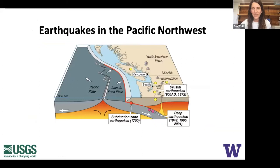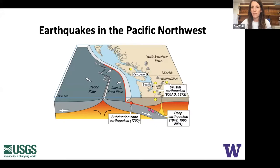Starting with the context of earthquakes in the Pacific Northwest: we expect three types of earthquakes here. There are shallow earthquakes in the crust from crustal deformation, deep earthquakes in the subducting Juan de Fuca slab — our most common type, with one as recently as 2001 — and we know the Cascadia Subduction Zone is capable of large magnitude 9 earthquakes on the megathrust fault offshore. The last such earthquake occurred in 1700, confirmed by a tsunami that reached Japan. M9 stands for magnitude 9.